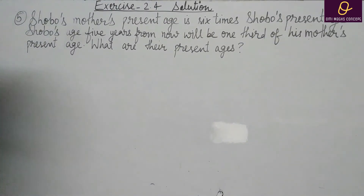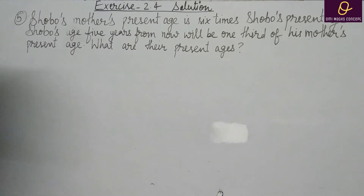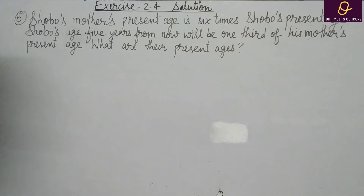5th question: Shobu's mother's present age is 6 times Shobu's present age. Shobu's age 5 years from now will be one third of his mother's present age. What are their present ages? हमारे पास 6 times given है. Times के right hand side में जो लिखा हुआ है उसको let करिए — Shobu's present age. तो यहाँ पर: present age of Shobu equal to y years.